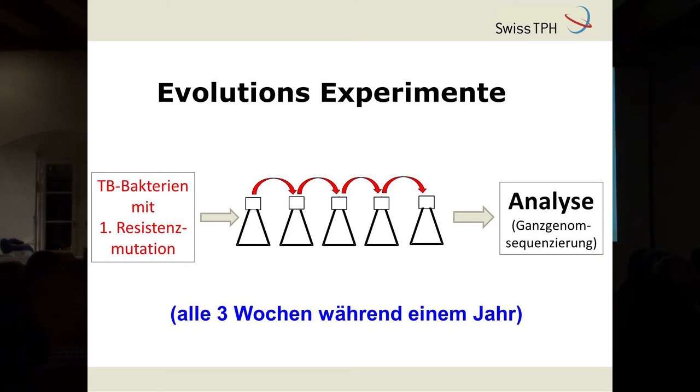In dem speziellen Fall haben wir mit Bakterien angefangen, die schon resistent waren – also die hatten schon diese erste Mutation. Und wir haben sie dann über ein ganzes Jahr weiter gezüchtet, in der Hoffnung, dass sie dann diese zweite Mutation auch bekommen, und dann zu schauen, wo diese Mutationen sich befinden. Das haben wir dann mit sogenannten Ganzgenom-Sequenzierungsanalysen gemacht. Und wir haben dann effektiv solche Zweitkombinationsmutationen gefunden.